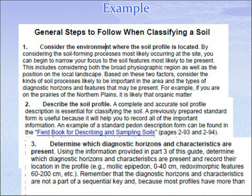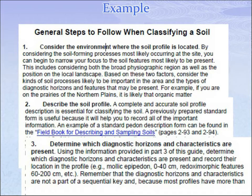The illustrated guide lists general steps to follow when classifying a soil — basically five steps. First, consider the environment where the soil profile is located. Second, describe the soil profile. Third, determine which diagnostic horizons and characteristics are present. Fourth, identify the soil moisture and temperature regimes. Fifth, determine the classification.